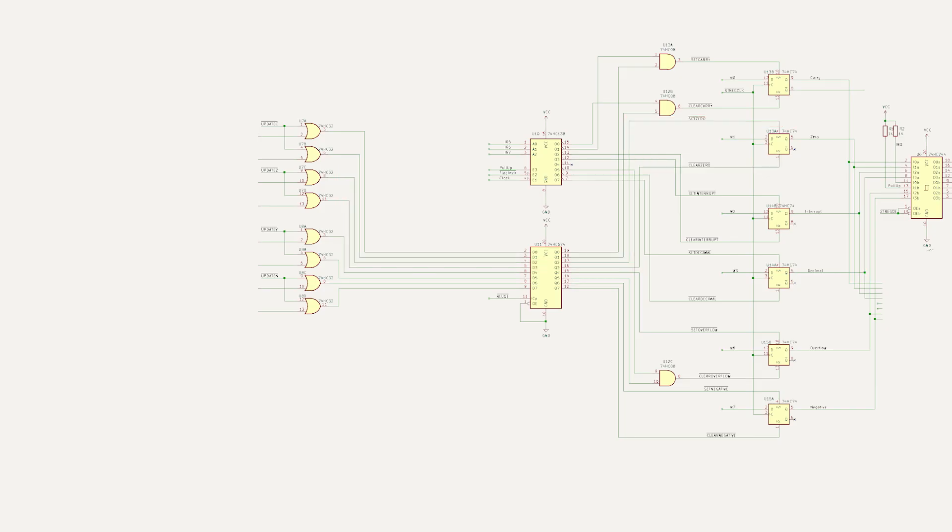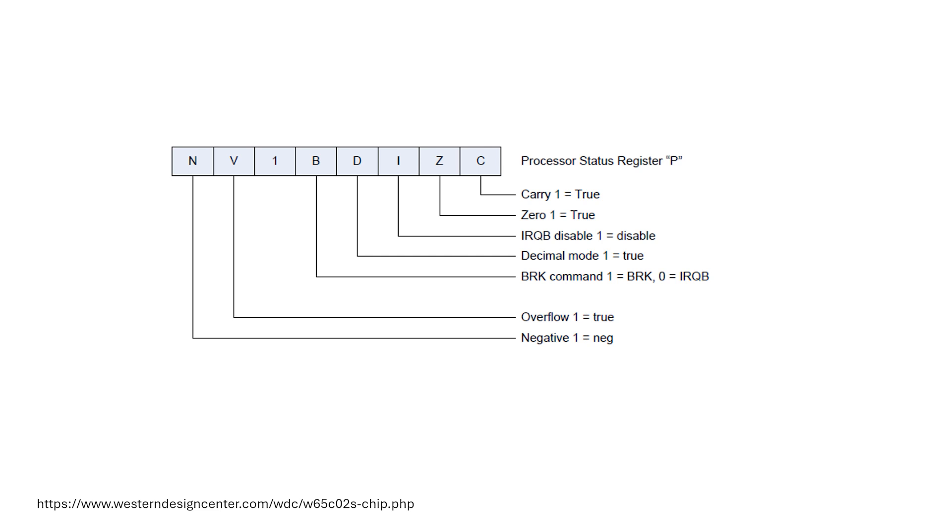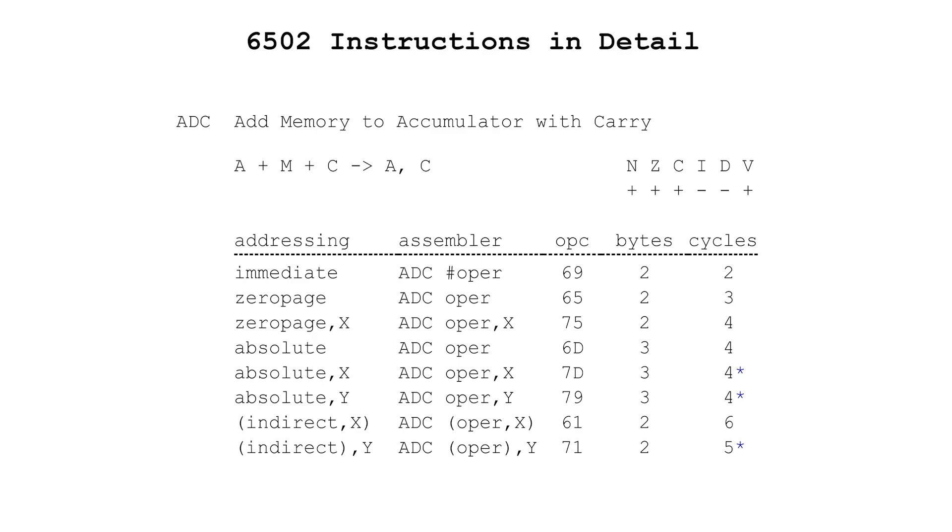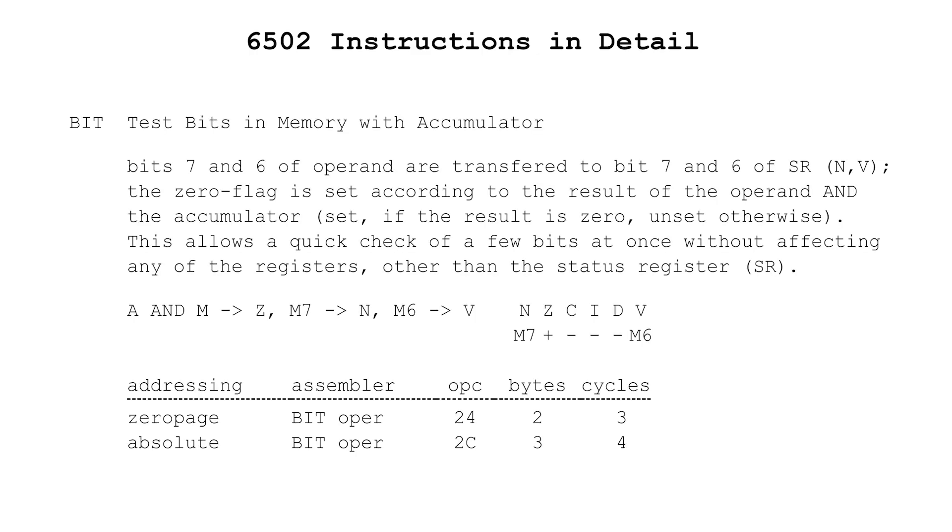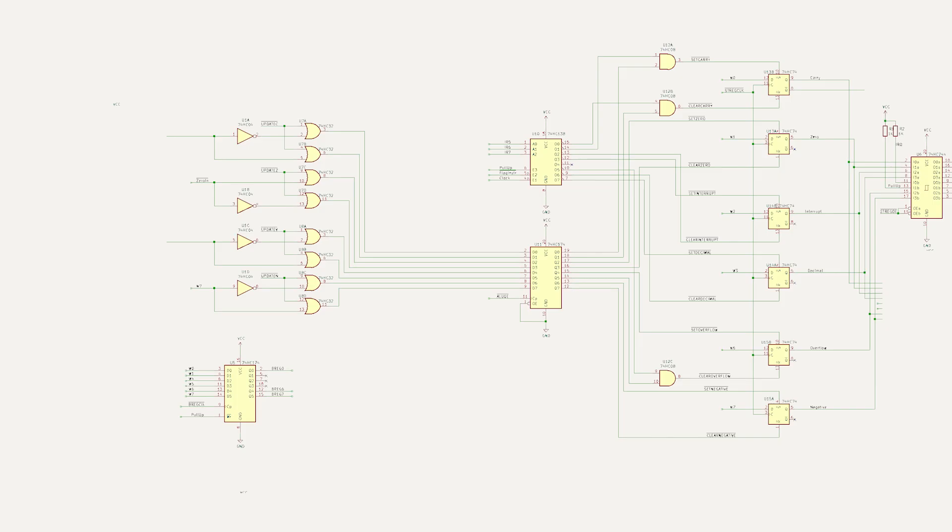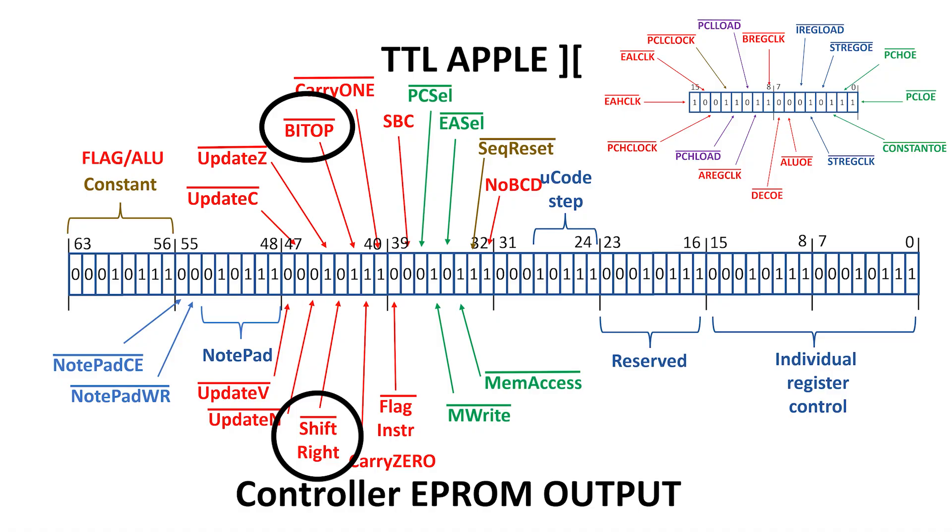All right, we're getting closer. Now, overflow and carry are a bit more complex than zero and negative. For example, carry can come from the ALU from an addition or a subtraction, but it can also come from bit zero or bit seven during a rotation. Even worse, overflow can come from bit six of the operand. So, I'm going to need to store bits zero, six, and seven from the B register, and this register mirrors B for local use. Now, I also need some logic to decide how to update carry and overflow, and that's what this dual four-to-one multiplexer is for. Based on the control word, it selects how carry and overflow are updated.